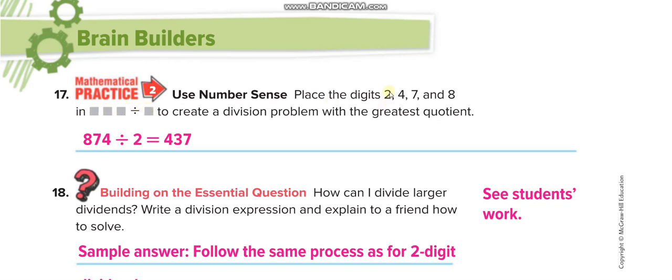The smallest number in these four is 2, make it the divisor. From these three, the biggest number you can make is 874. 874 divided by 2 is 437, which is the biggest possible quotient with these four numbers.